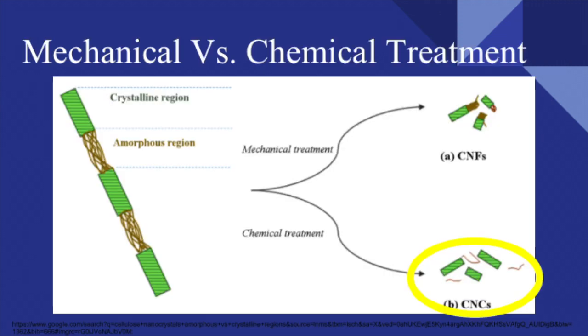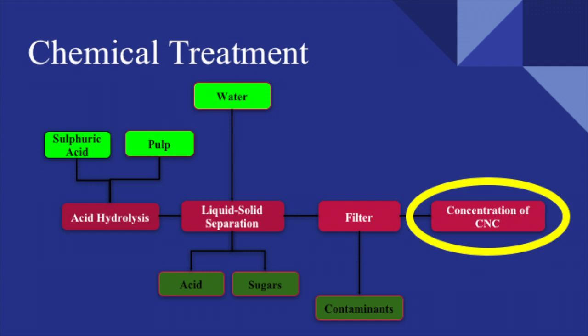Mechanical treatment forms cellulose nanofibrils, while chemical treatment forms cellulose nanocrystals. As seen in the diagram, cellulose nanocrystals are comprised of mostly crystalline regions, while cellulose nanofibrils are comprised of a combination of both the amorphous and crystalline regions. The chemical treatment of pulp includes acid hydrolysis, which combines pulp and sulfuric acid, followed by liquid-solid separation, where water is inputted and acid and sugars are outputted, followed by filtration to remove contaminants, and finally obtaining the concentration of cellulose nanocrystals.